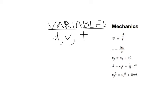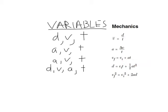The next formula has A, V, and T. The formula after that has the same three: A, V, and T. Then I look at the next formula and notice it has D, V, T, and A — all four variables. So this is the only formula to use if all four variables are involved in the problem.